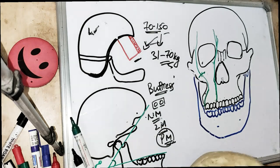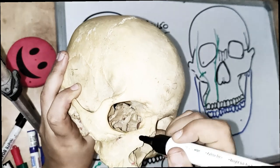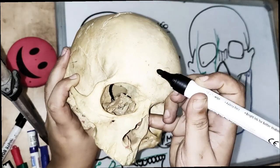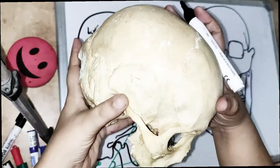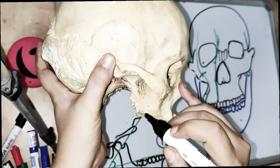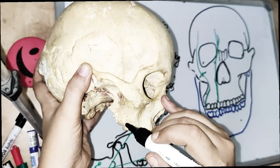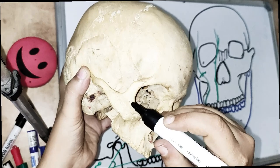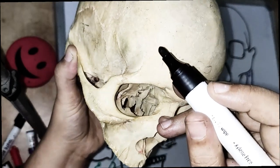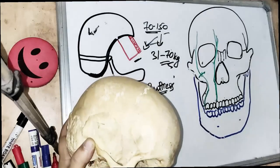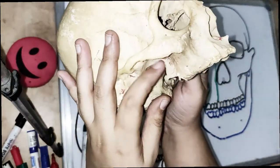The nasomaxillary buttress starts at the canine fossa, goes towards the lateral wall of the nose, and goes up to the frontal bone. The zygomaticomaxillary buttress starts from the maxillary second molar alveolar process, goes to the body of the zygoma, crosses the frontozygomatic suture, and goes towards the frontal bone. The pterygomaxillary buttress is in the posterior part of the maxilla towards the pterygoid plate.